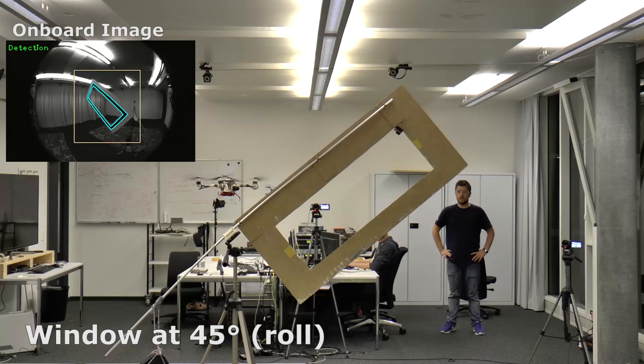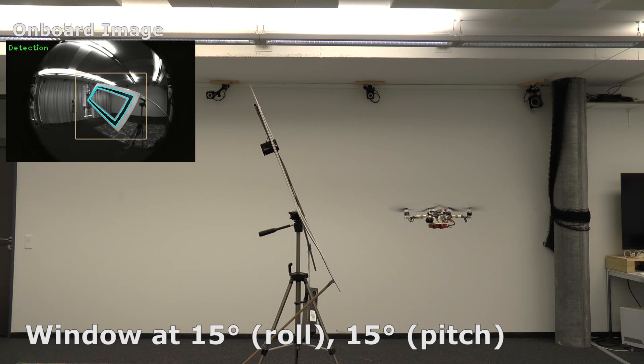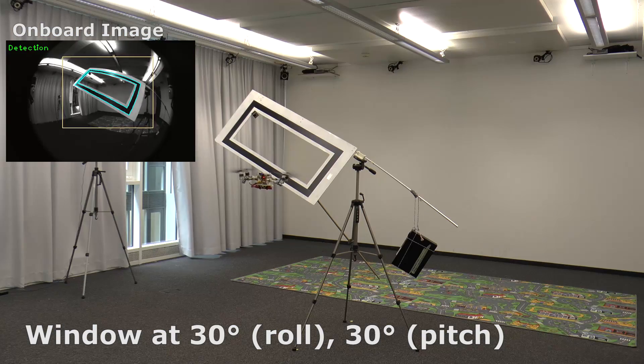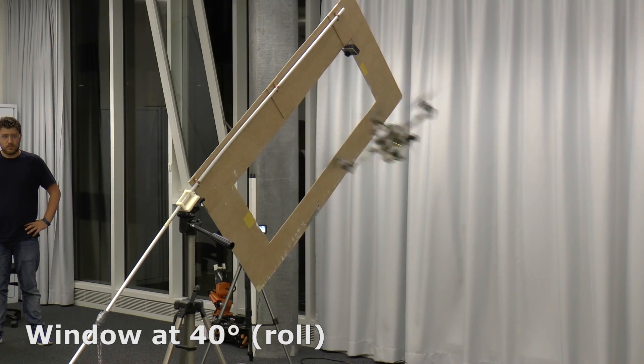Our vehicle weighs 830 grams and has a thrust to weight ratio of 2.5. The vehicle reaches speeds of up to 3 meters per second and angular velocities of up to 400 degrees per second with accelerations of up to 1.5 G.